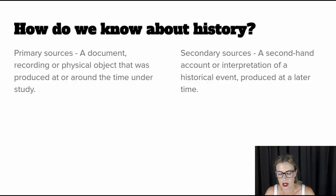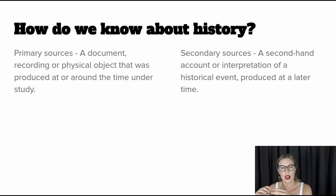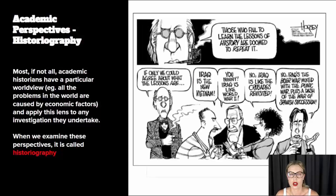The second type of source is a secondary source — a second-hand account or interpretation of a historical event produced at a later time. A secondary source has usually gathered primary sources together and then synthesized them to produce a new source, such as a textbook, an encyclopedia, or a website. When we're talking about doing history, we need to examine how historians actually do history, and to do that we need to talk about academic perspectives and historiography.